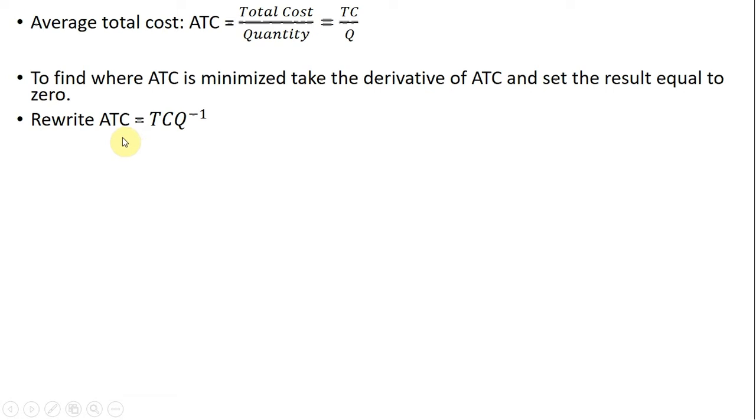Before I take the derivative, I'm going to just rewrite average total cost to equal TC times Q to the power of minus one. This way I can avoid using the quotient rule when taking the derivative, and I can just use the general product function rule.